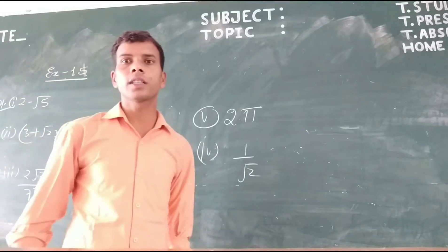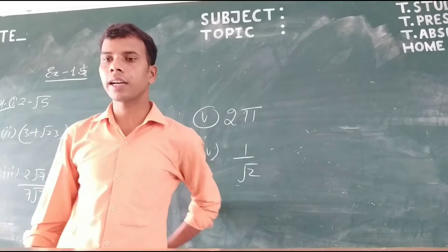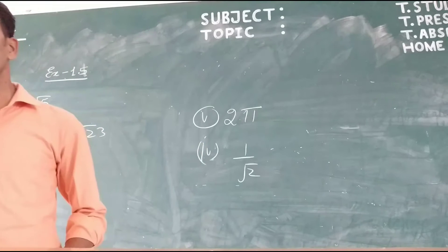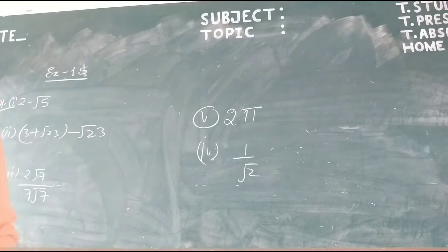Hello students, today we are going to discuss about math subject, class 9, exercise 1.5, question number 1. In this question, classify the following numbers as a rational or irrational number.